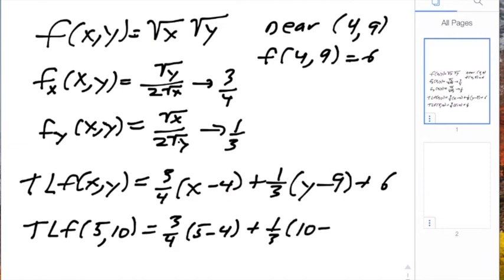10 minus 9 plus 6, which is 3 fourths plus 1 third plus 6, which is approximately 7.0833.